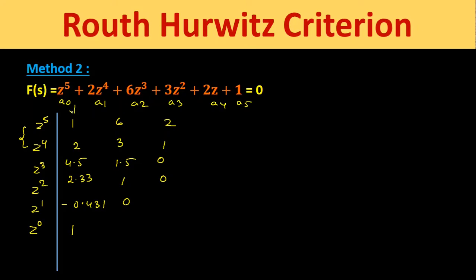Examining the first column of the Routh array, we can see two sign changes: first from positive to negative, then from negative to positive. Since there are two sign changes, this system is unstable — the same result as Method 1, confirming both methods give consistent conclusions.